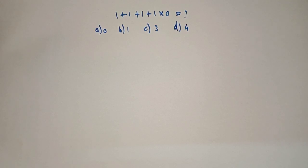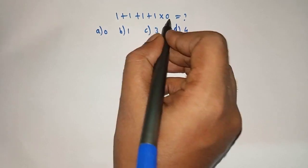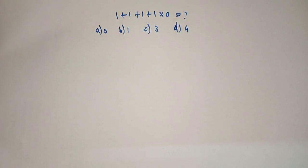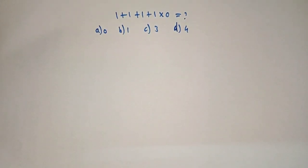Hello friends, welcome to Ahamass. 1 plus 1 plus 1 plus 1 into 0 is equal to what? Option A: 0, Option B: 1, Option C: 3, Option D: 4.